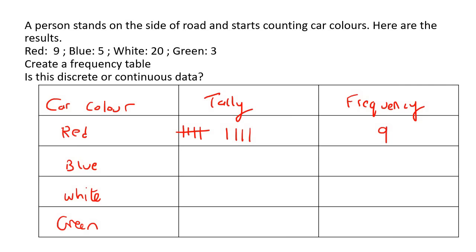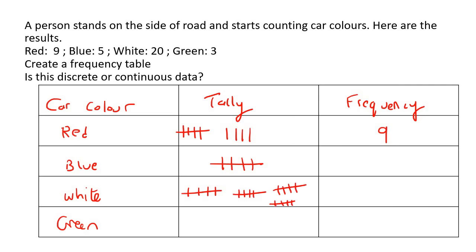For the blue cars there were five, so you can imagine standing on the side of the road counting each blue car. Five always means you put a line through the tally marks like that. For the white cars you would end up with four of those tally groups, because each group is five and five times four is 20. Then for green: one, two, three. So that's what the completed frequency table looks like.